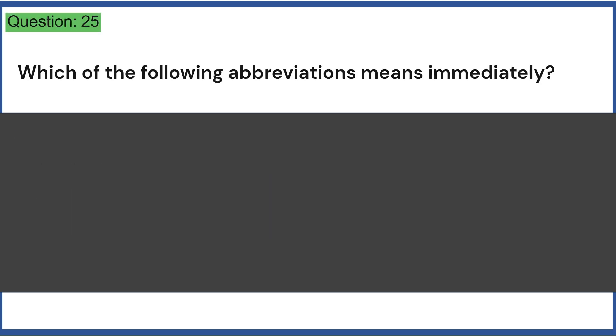Which of the following abbreviations means immediately? a. PRN b. QD c. TID d. STAT e. PUR. Answer, D.